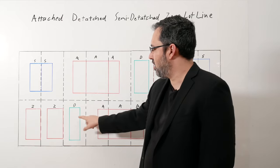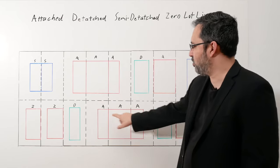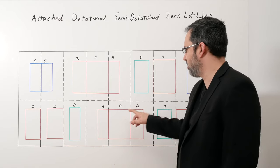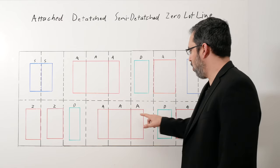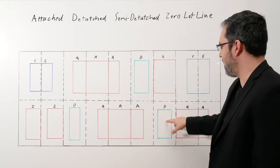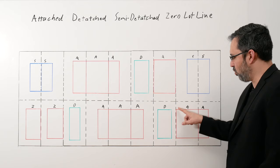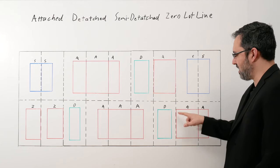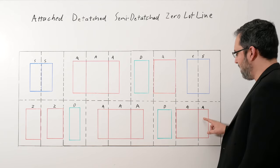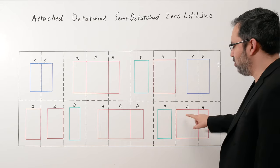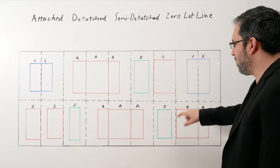A detached has side yards on both sides. Attached—once again, it's in a group of three. It's attached. Three or more—all of them. Detached, two side yards. And then this one is attached as well. One is attached because it's touching two property lines. And then this one is attached to the attached. That makes them both attached.